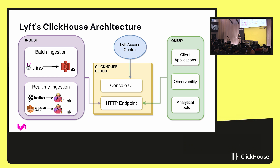Diving into our architecture: on the ingestion side, on the batch side we aggregate our offline data into S3 using Trino. For real-time ingestion — which Ritesh will talk about more — we have a couple of different ways to stream events through Flink into ClickHouse. On the querying side, we have client applications and observability using the Grafana plugin for ClickHouse, as well as analytical tools to visualize trends for ClickHouse data.